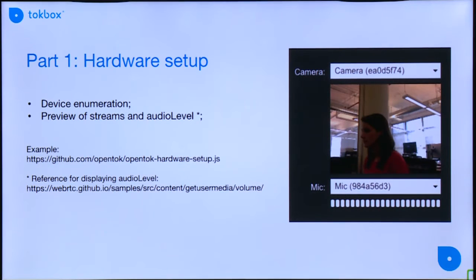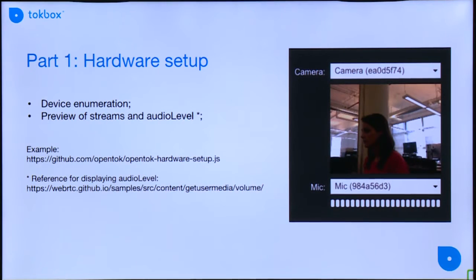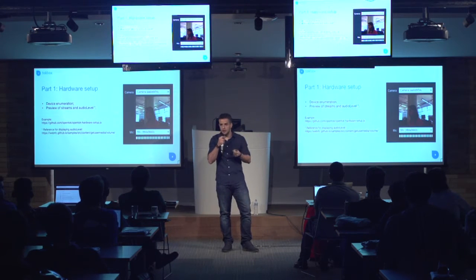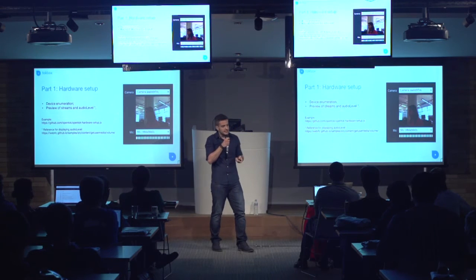For the hardware setup, the idea is that inside your application you can implement a preview screen, just like this one. Users, before they join the conference, can basically test their camera and microphone to guarantee that everything is working before they join. So how can I implement something like this?